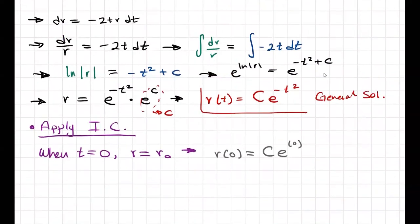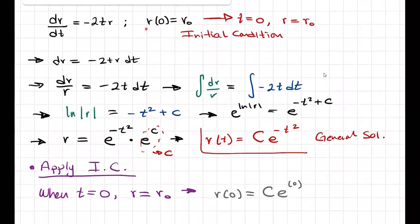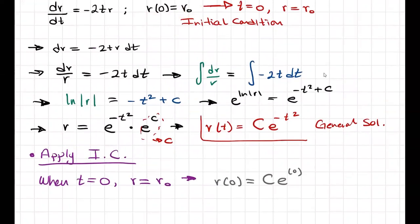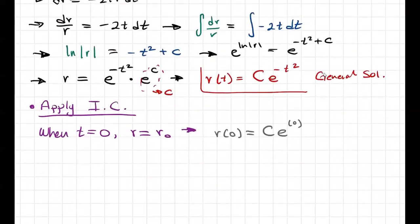You can see that we already have a definition for this, which was given over here on top, which is r_naught. So then we can rewrite that as r_naught is equal to C e to the zero.